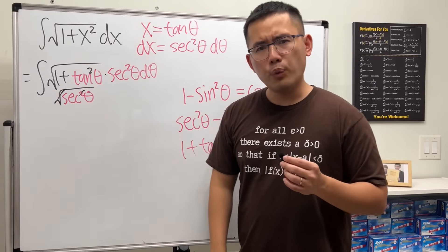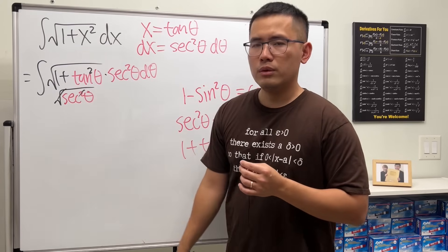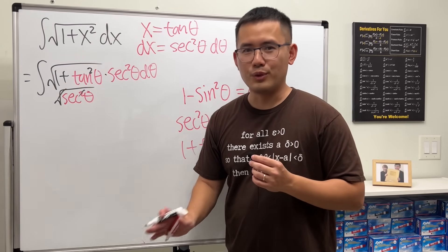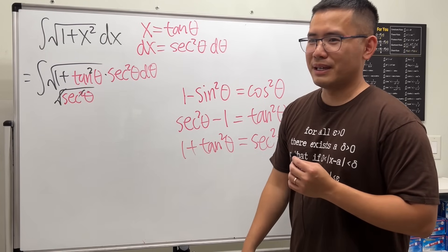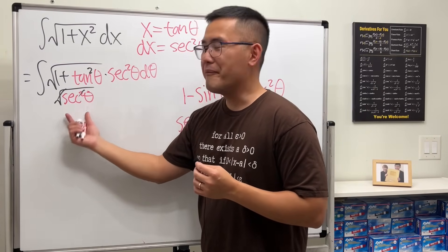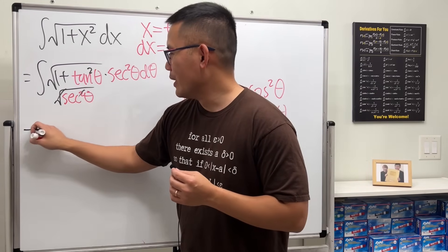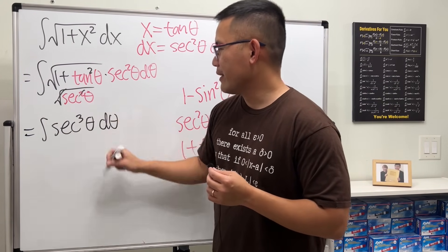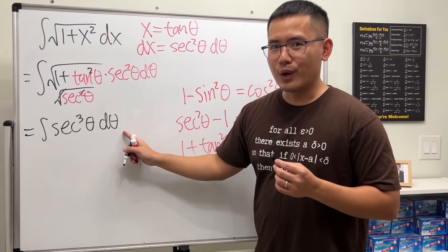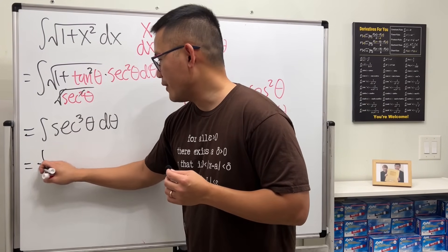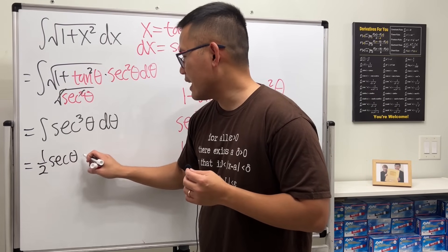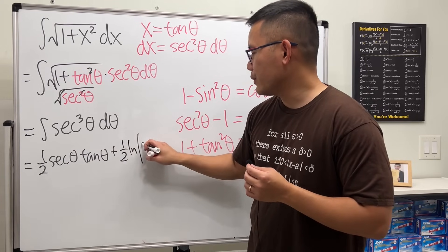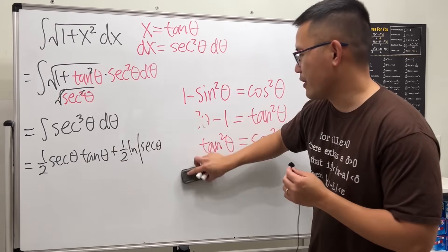But wait, don't we need the absolute value? Yes, right, but it's okay. Let me just tell you we don't need to here—just don't worry about it. I know that's bad teaching, but whatever. Anyway, this is just secant theta times another secant theta. We are really just looking at the integral of secant third power theta d theta. And if you did the homework already, you will know the answer for this right here is one half secant theta times tangent theta plus one half ln absolute value secant theta plus tangent theta.